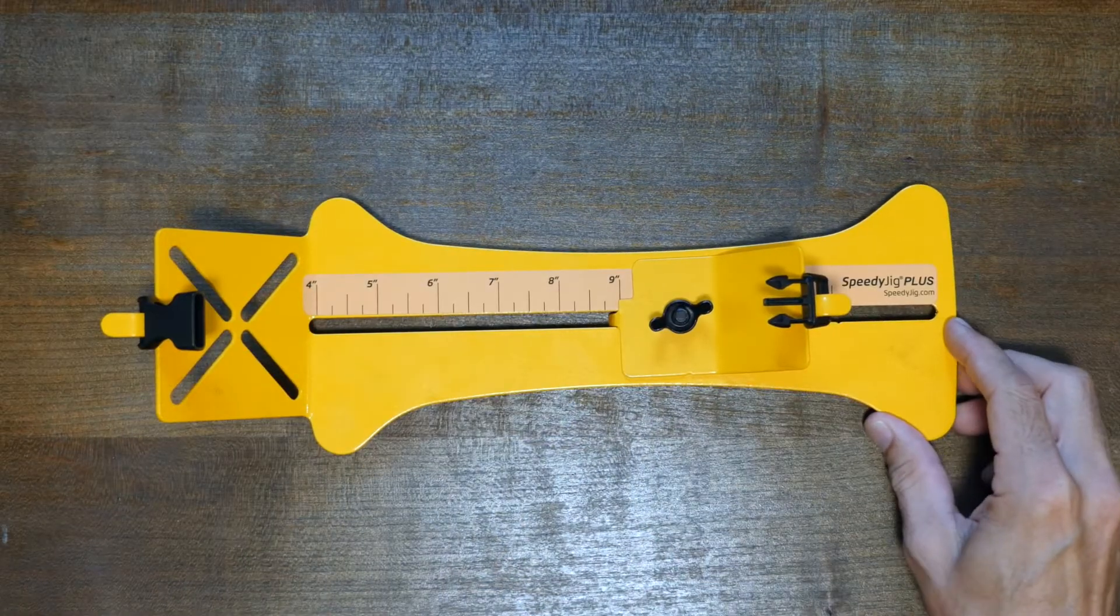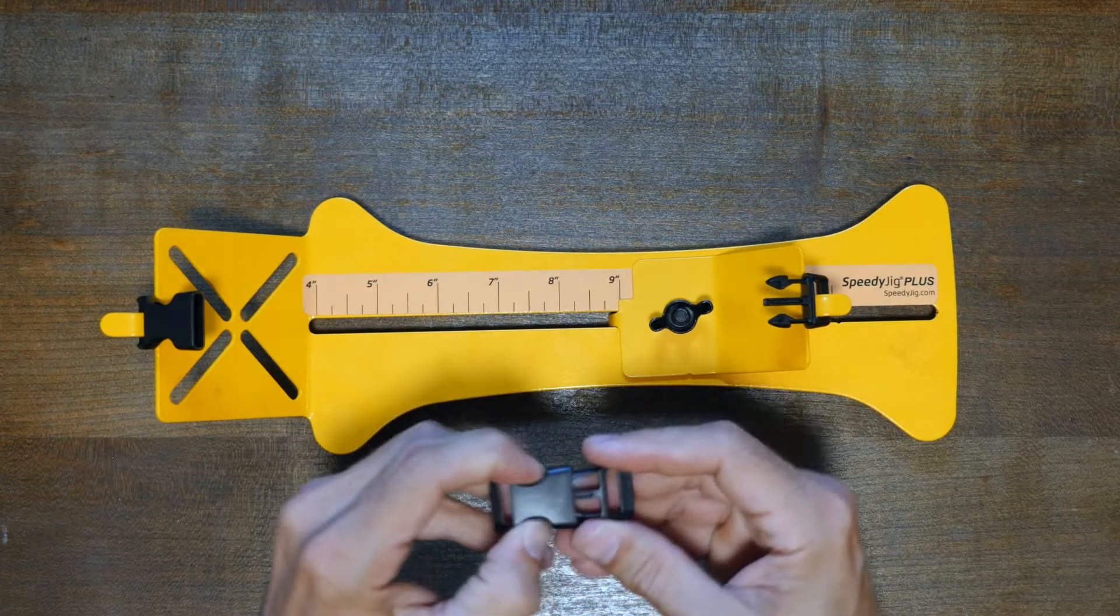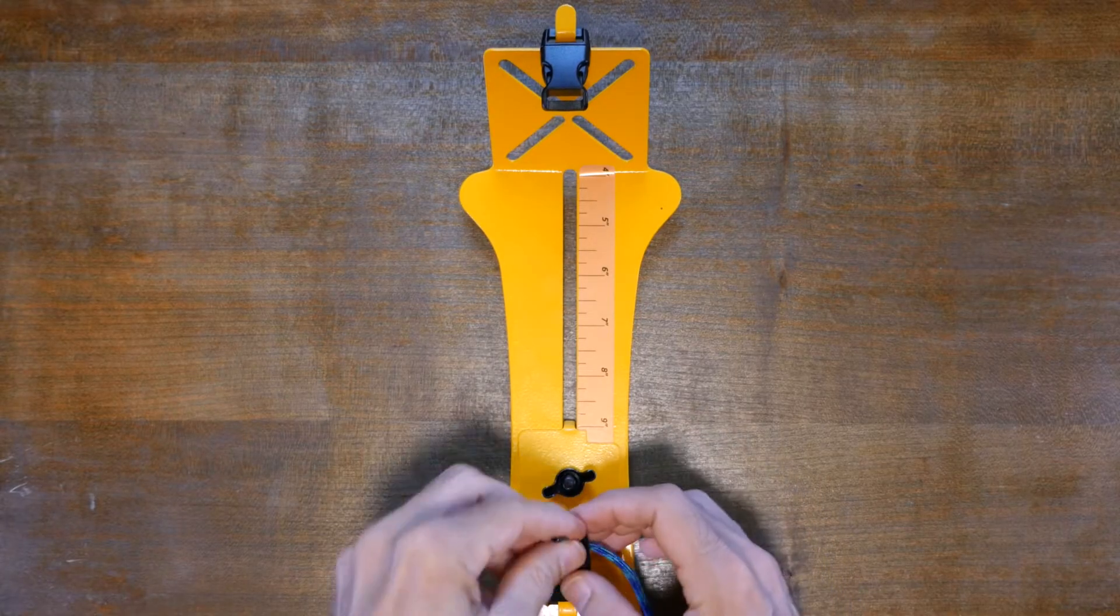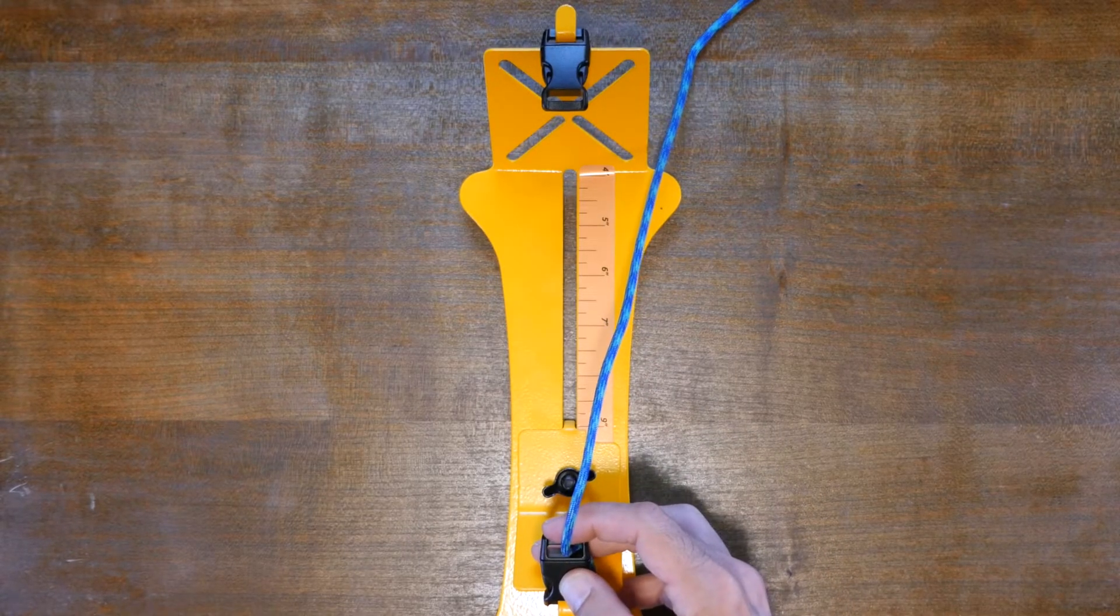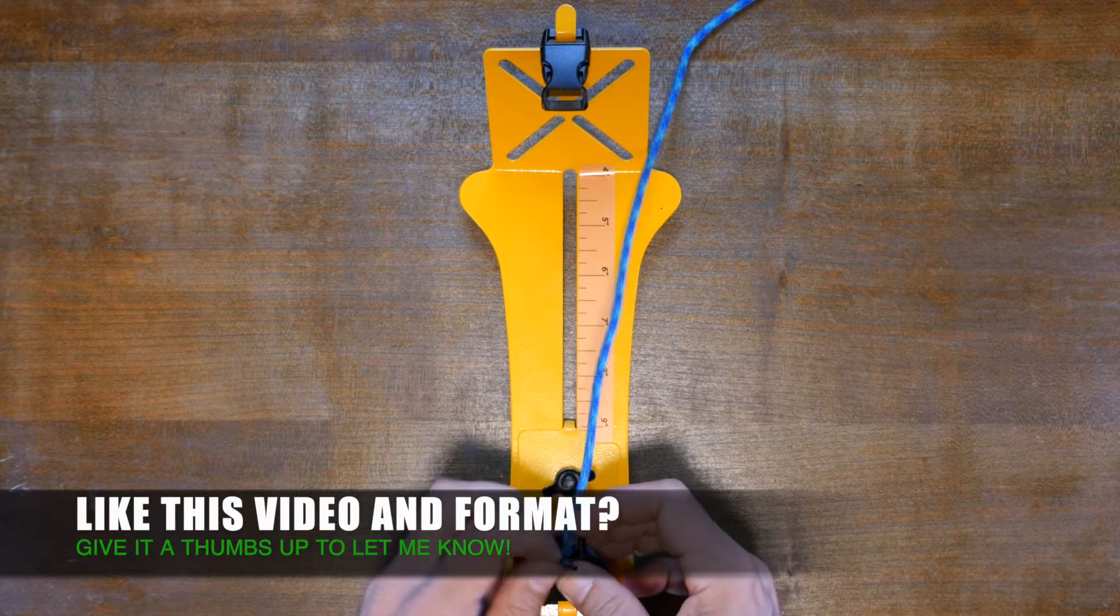You can see the buckles easily loop over the ends of the jig. I think my first bracelet will be a Cobra weave since it's the original style. Getting the bracelet set up was quick and I feel like I've said the word easy a lot during this video, so I guess the name speedy jig makes sense.